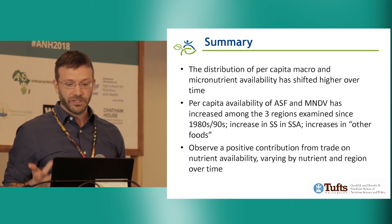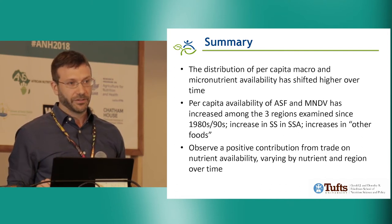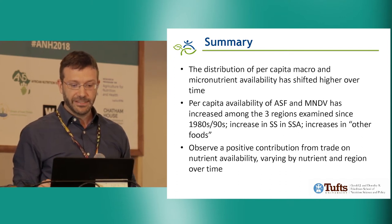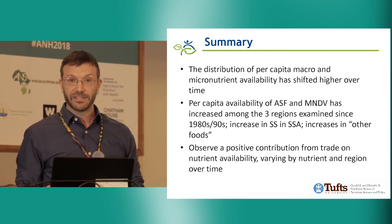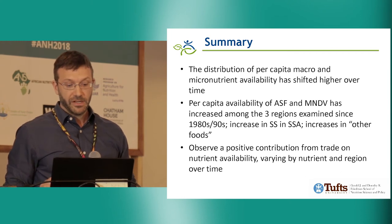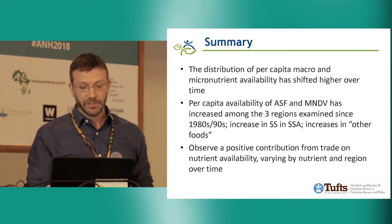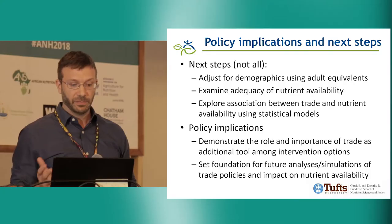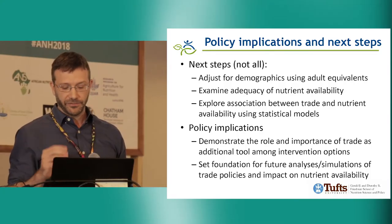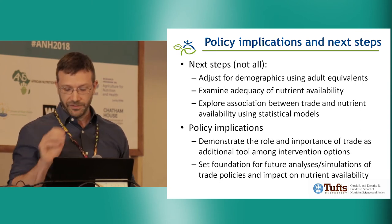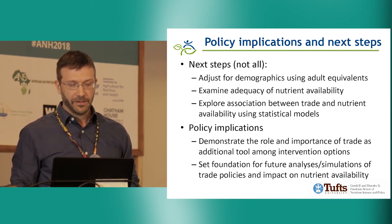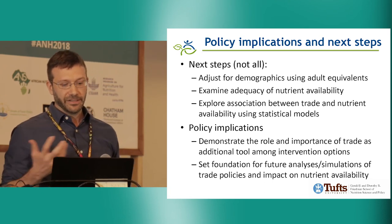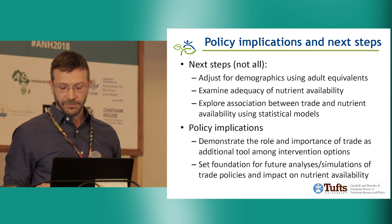In summary, the distribution of per capita macro and micronutrient availability has shifted higher over time. Per capita availability of animal source foods and micronutrient-dense vegetable foods has increased among the three regions examined since the 80s and 90s, with significant increases in starchy staples in sub-Saharan Africa, alongside concerning increases in other foods. We observe a positive contribution from trade on nutrient availability, varying by nutrient and region over time. Next steps include adjusting for demographics using adult equivalents, examining the adequacy of nutrient availability, and exploring these associations using statistical modeling.